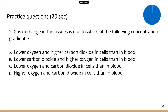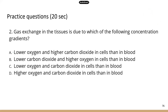Next question is about gas exchange at the tissues. Cells perform metabolism, so they release a lot of carbon dioxide and consume a lot of oxygen. So they are going to have lower oxygen concentration but higher carbon dioxide concentration than in blood. So the correct answer is A.